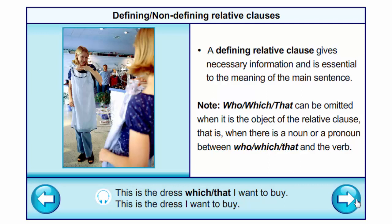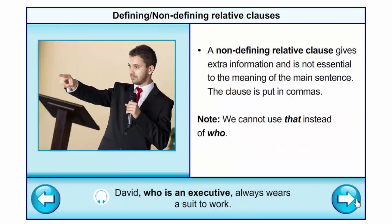A non-defining relative clause gives extra information and is not essential to the meaning of the main sentence. The clause is put in commas. We cannot use that instead of who.